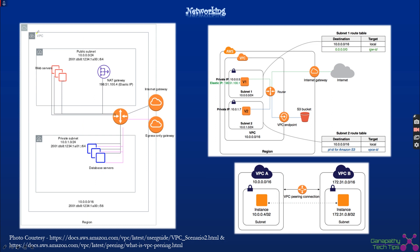Looking at the diagram — inside the VPC we have two subnets: a public subnet and a private subnet. The public subnet has access to the Internet Gateway, so web servers on the public subnet use a router directed to the Internet Gateway. For the private subnet, database servers are deployed there for security. They connect to the NAT Gateway for internet access, which allows single-directional traffic — database servers can reach the internet but internet traffic cannot reach them.